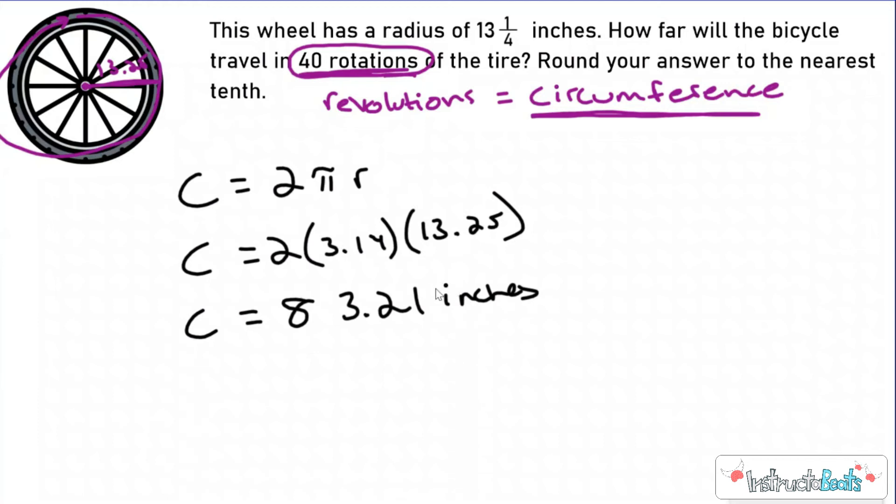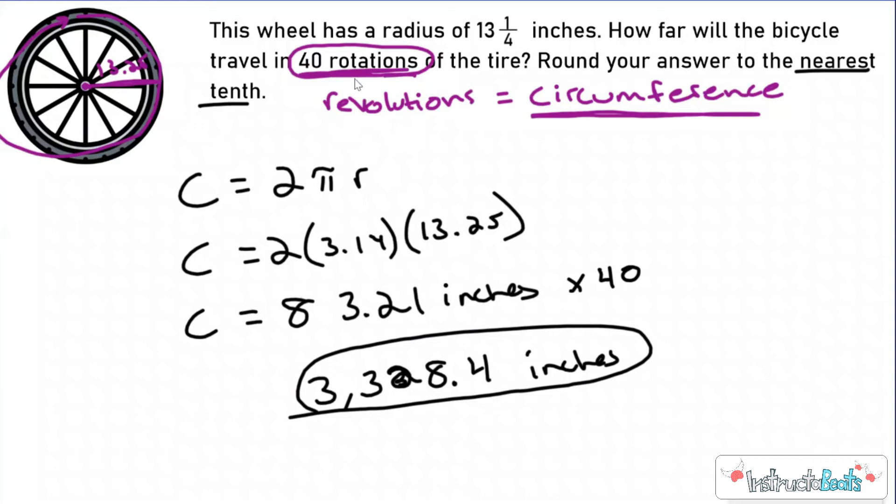But again, this is not my final answer because the bike wheel made 40 rotations or 40 revolutions. So how far did that go? And then at the end, we want to round our answer to the nearest tenth. So now I need to take 83.21 and I'm going to multiply that by 40 because I did my circumference 40 times. And when you solve that, you see the answer for this question should be 3,328.4 inches. So again, this is another example of a type of problem where they ask you to find the circumference, but you had to do something else with it. And also introducing you to the word rotations and revolutions as another way to ask for circumference.